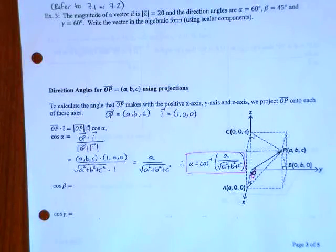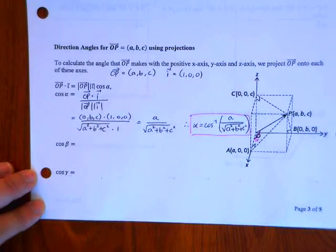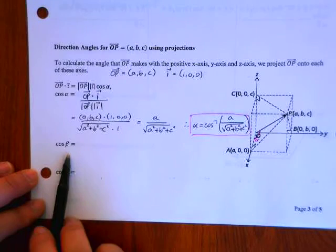So repeat, but just with the other direction angles. What would be cos beta equal then? Repeat, repeat. Cos beta equals.